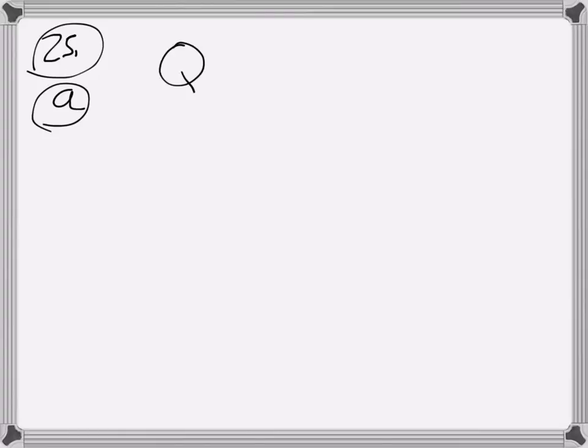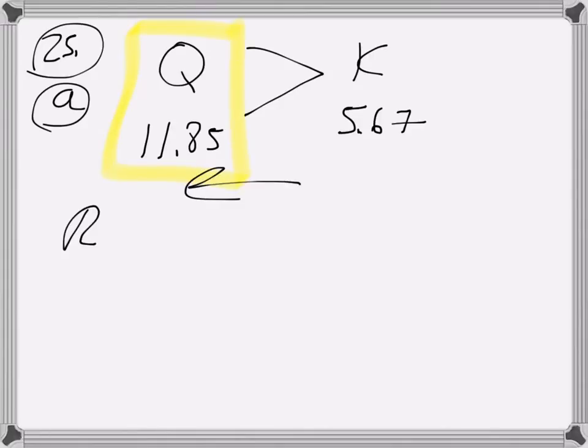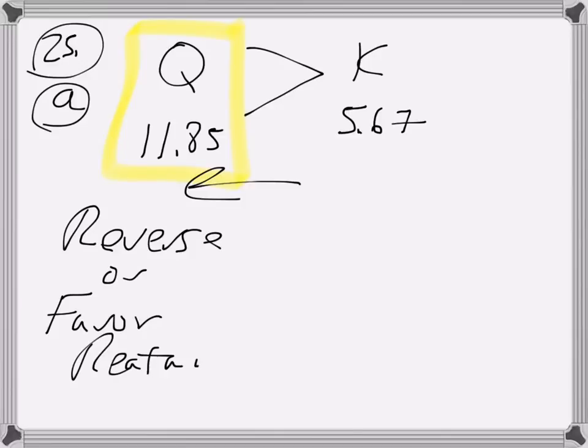If you look at Q, they say that's 11.85, and if you look at K, the problem says it's 5.67. In this case Q is greater than, which means this side is bigger, which means that this is going to go in reverse, or it would favor reactants at this point. Therefore the left is favored.